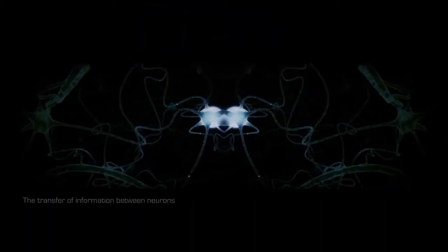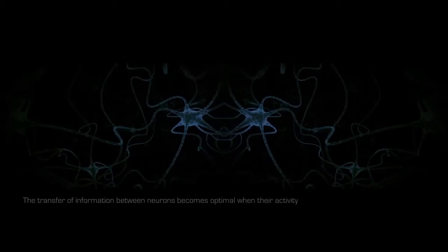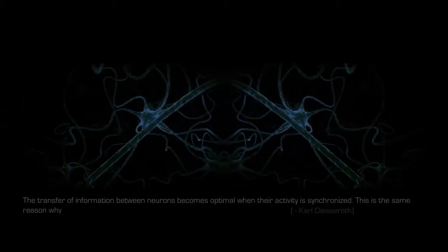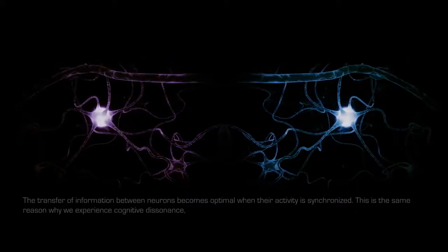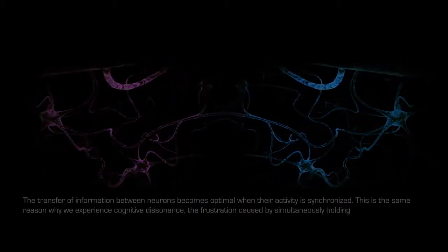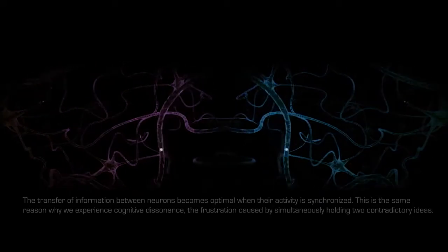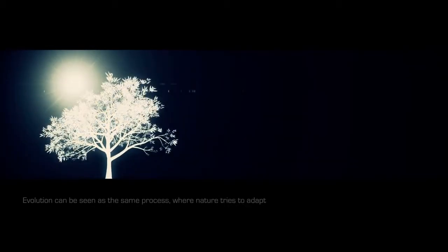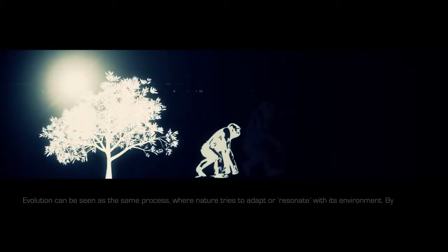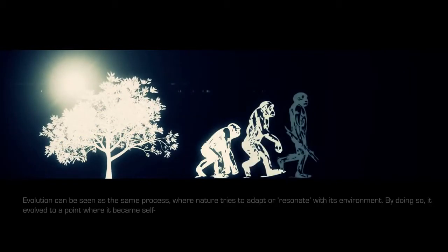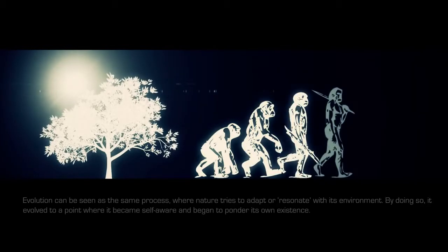The transfer of information between neurons becomes optimal when their activity is synchronized. This is the same reason why we experience cognitive dissonance, the frustration caused by simultaneously holding two contradictory ideas. Will is merely the drive to reduce dissonance between each of our active neural circuits. Evolution can be seen as the same process where nature tries to adapt or resonate with its environment. By doing so, it evolved to a point where it became self-aware and began to ponder its own existence.